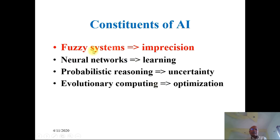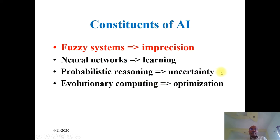What are fuzzy systems about? Fuzzy systems deal with imprecision — this imprecision is the key for their operation. All human beings speak natural languages and when we explain something in our natural language, we are not very precise. Our description may carry some imprecision. Neural networks deal with learning, probabilistic reasoning deals with uncertainty, and evolutionary computing or genetic algorithms deal with optimization — either minimization or maximization.